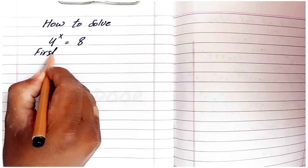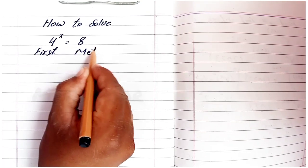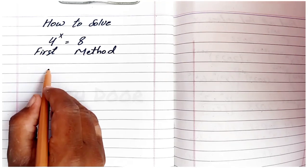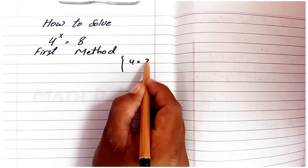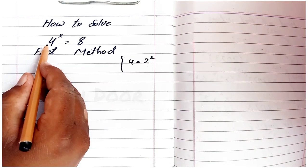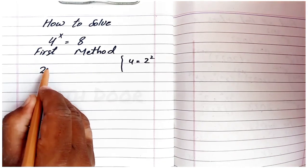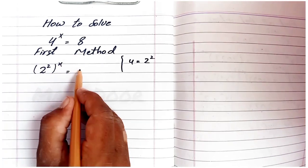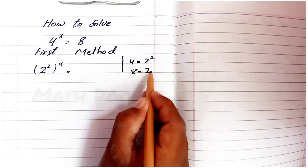First method: we write 4 as 2 power 2. So we have (2 power 2) to the power x, and 8 is equal to 2 power 3.